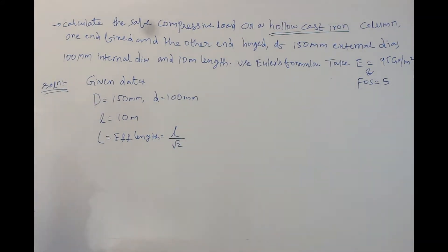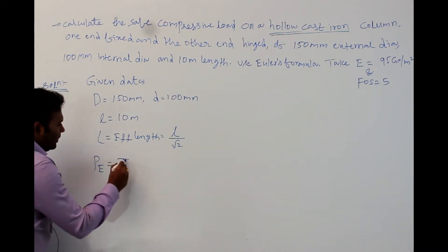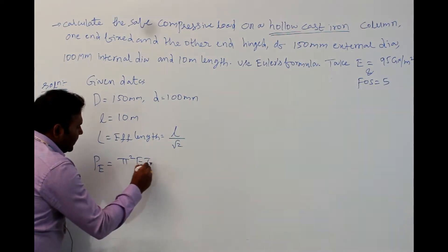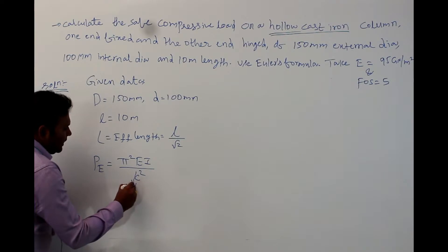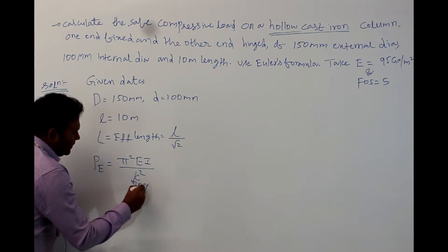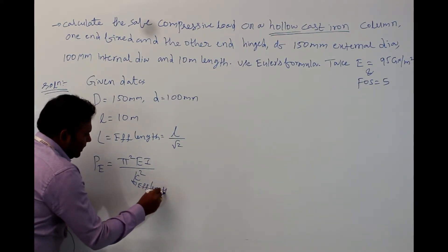Here they have given us to use the Euler's formula. You know the Euler's formula: P equal to pi square EI by L square. This is nothing but effective length.